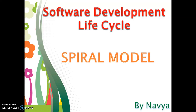Hello everyone, I'm Navya and I'm going to explain the spiral model, which is a part of the software development lifecycle. Each software development process moves through several phases depending upon the requirements and the activities that are to be performed for the desired outputs. For this, there are several process models which help in systematic software development. We're now going to see the spiral model.